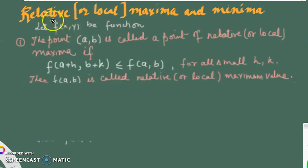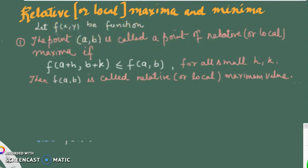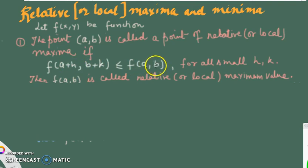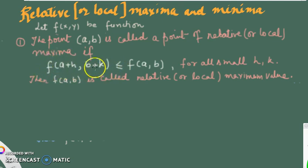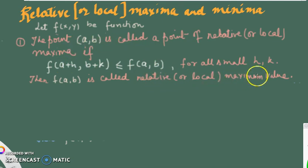Now let's define local maxima and minima — the words relative and local can be used interchangeably. A point (a, b) of the function f(x, y) is said to be a relative maximum if f(a+h, b+k) ≤ f(a, b) for any small selection of h and k. That is, nearby points — obtained by adding or subtracting a small quantity — have output values smaller than or equal to f(a, b). The value f(a, b) is then called the relative maximum value.